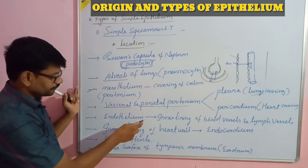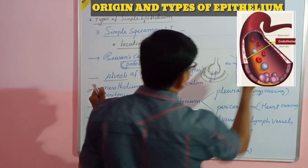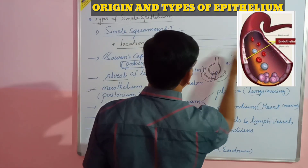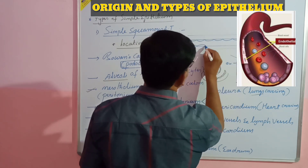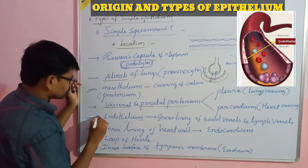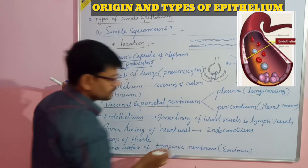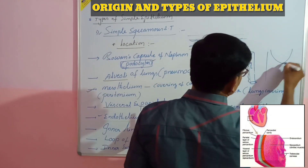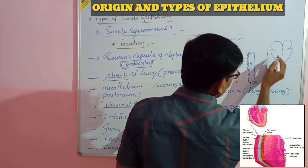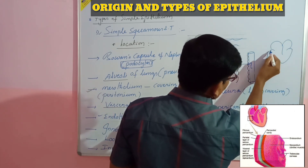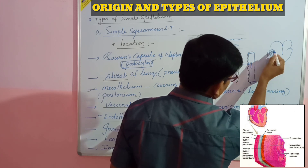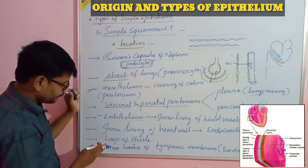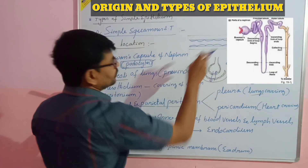Next is the endothelium. In blood vessels, there are three layers; the innermost layer is called the endothelium, which is made up of simple squamous epithelium. It is mostly present in blood vessels and lymphatic vessels. The innermost layer of the heart wall is called the endocardium, and it is also made up of simple squamous epithelium. Additionally, the loop of Henle in the nephron — where concentrated urine is formed in higher vertebrates — is also lined by simple squamous epithelium.